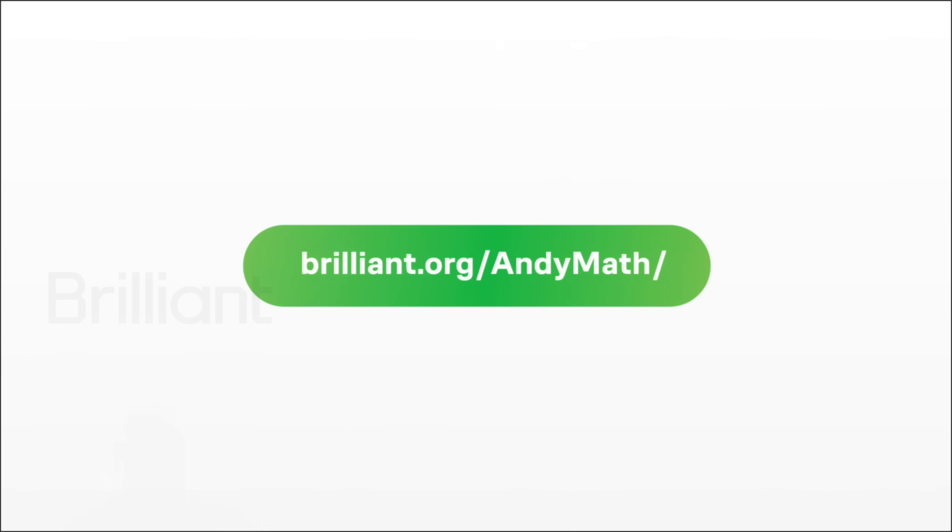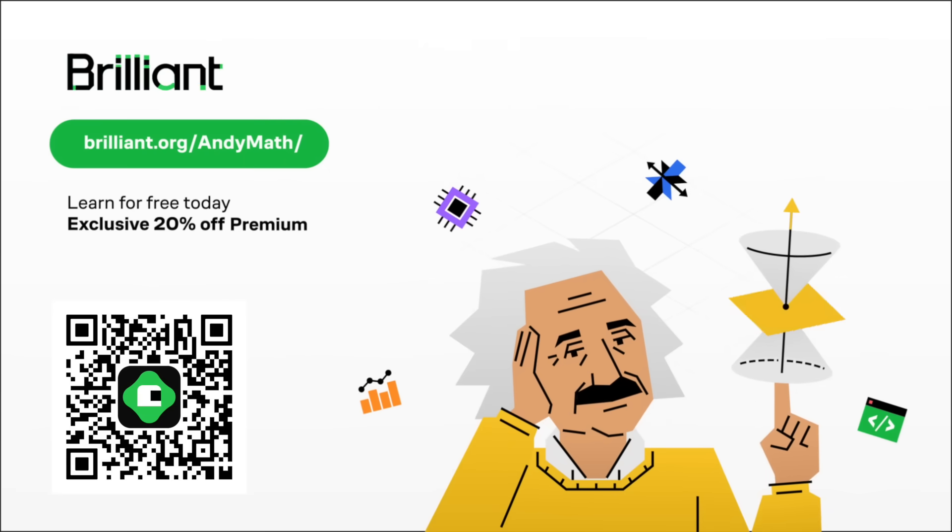To try Brilliant for free, visit brilliant.org/animath or scan the QR code on the screen, or click on the link in the description. You also get 20% off an annual premium subscription. How exciting.